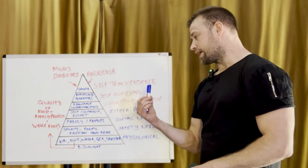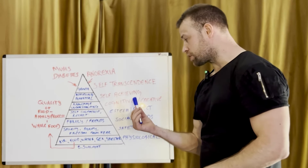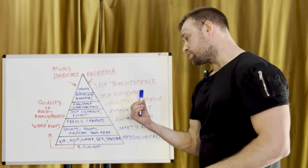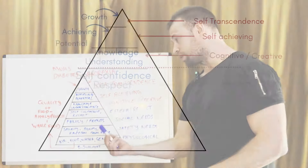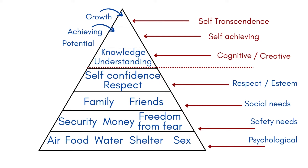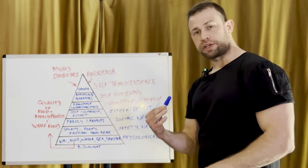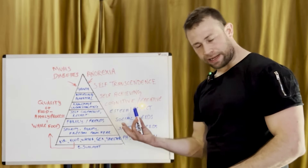Then there's a slightly different elevation within the pyramid. We move to cognitive and creative. To achieve cognitive or creative levels, we need more knowledge and understanding. Then we have self-actualisation — achieving a potential — and then the last one is self-transcendence, which is a goal you would want to reach. That goal might be a social goal, such as achieving something in a job.